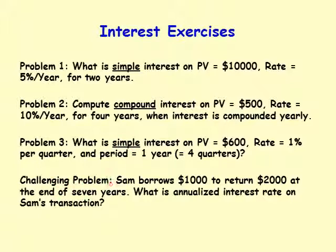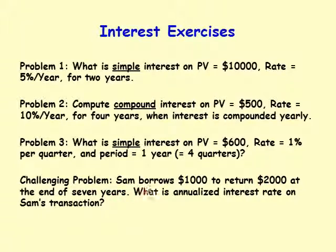Here is a challenging problem. Sam borrows one thousand dollars and must return two thousand dollars at the end of seven years. What is the annualized interest rate on Sam's transaction? This involves compound interest with a twist — the rate is not given. The principal value is one thousand dollars, the final value is two thousand dollars, and the number of years is seven. You must compute the interest rate.